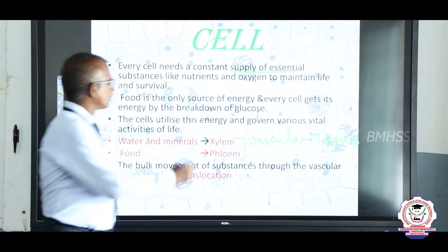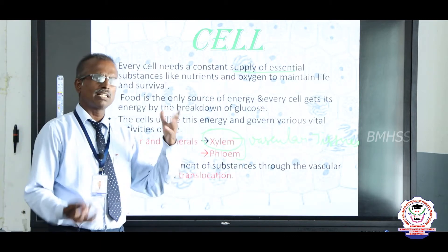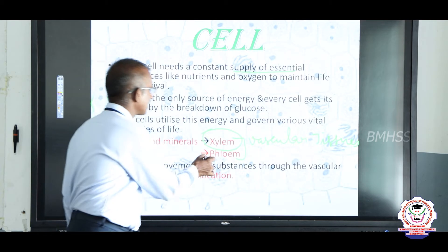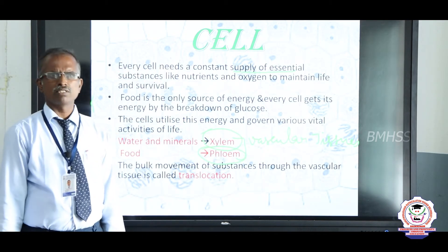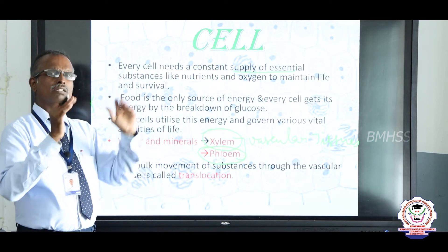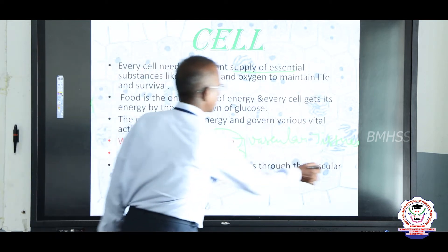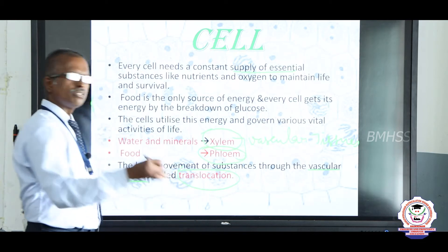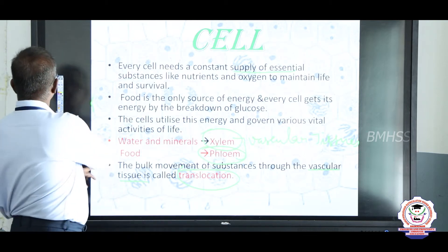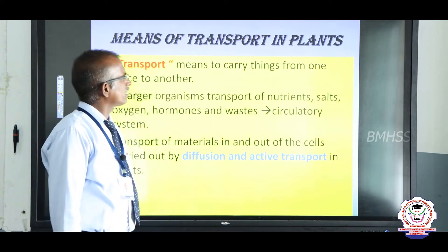Water and minerals are transported through vessels called xylem. Food is prepared in the leaves — the leaves are called the kitchen house of the plant. That food is transported to all parts of the plant through vessels called phloem. When food materials are prepared in bulk, the bulk movement of food substances from the leaves to all parts of the plant body is called translocation.